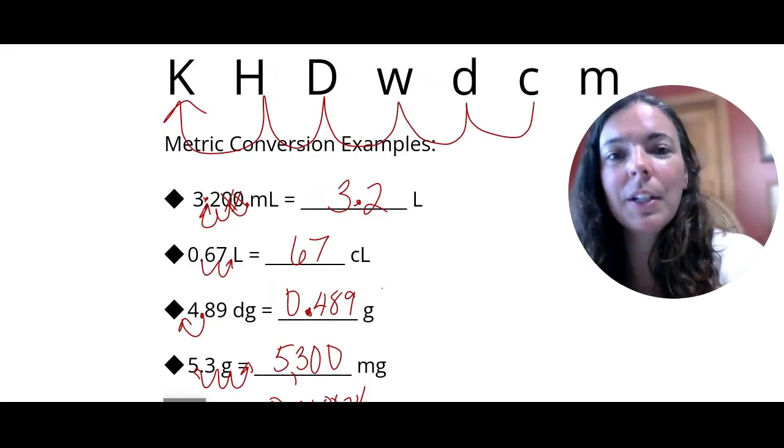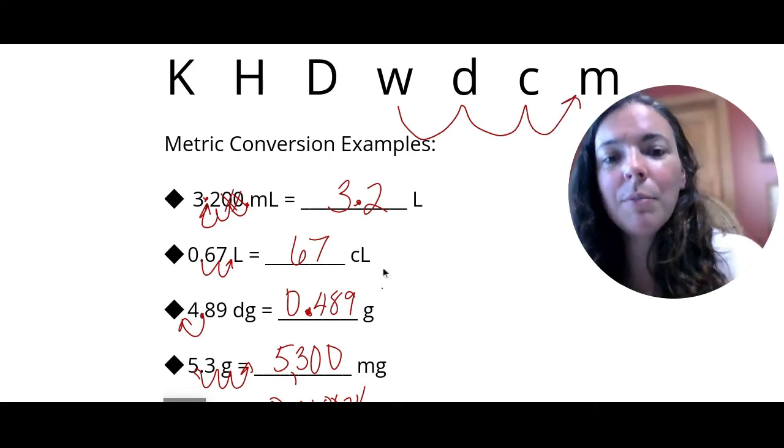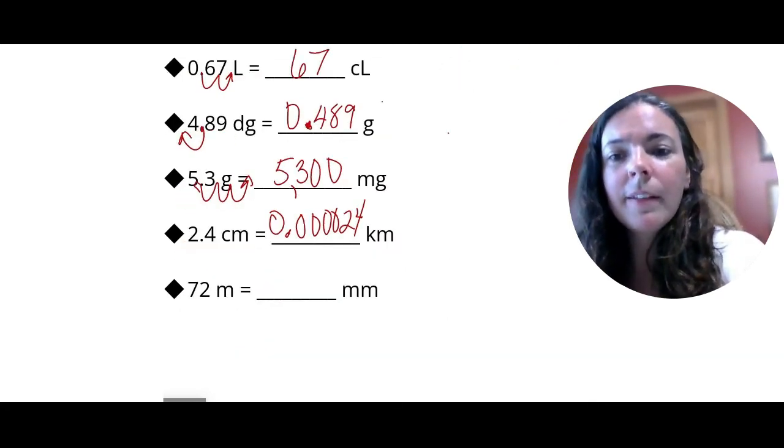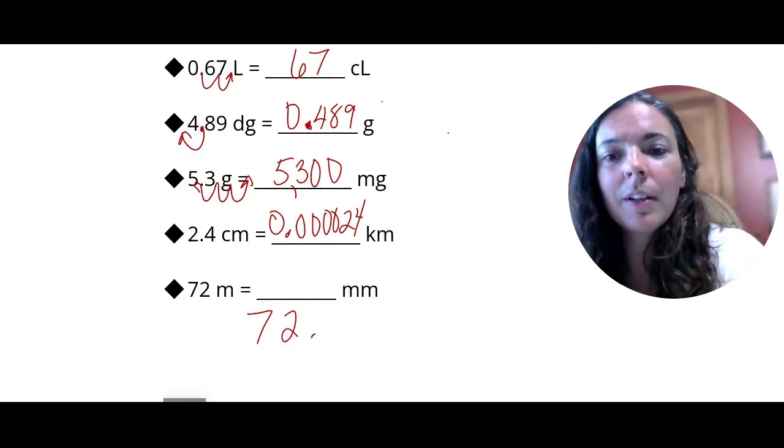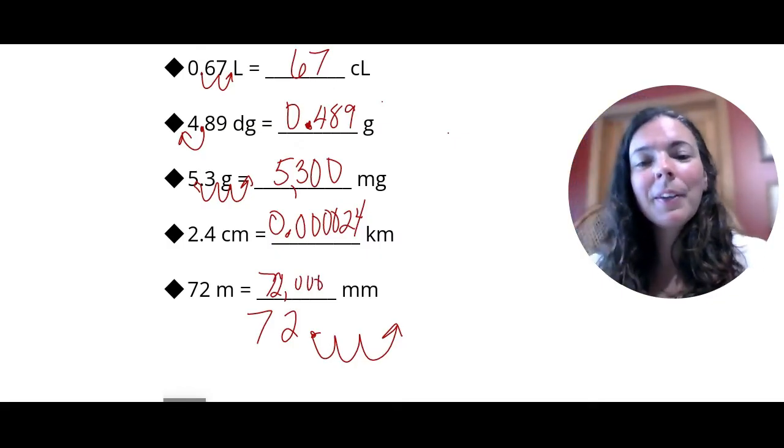Let's try this last one. Go from 72 meters to millimeters. So if I'm going from meters to millimeters, I'm going to start at my whole unit and go one, two, three times to the right. So 72 decimal would be here, which gives us 72,000 millimeters.